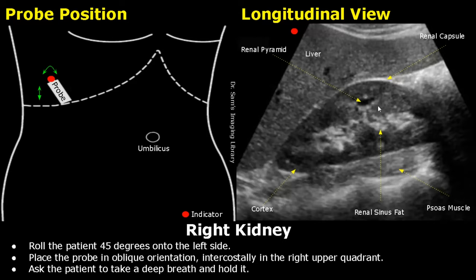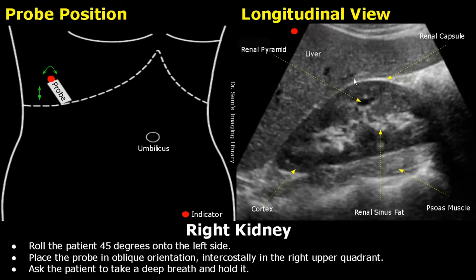The right kidney is scanned through the liver. This is the upper pole of the kidney — it will always be seen in the left half of the image. And this is the lower pole of the kidney, seen in the right half of the image. This interface between the liver and right kidney is a potential space called Morrison's pouch. In case of ascites and trauma, you may find an echoic fluid in Morrison's pouch.